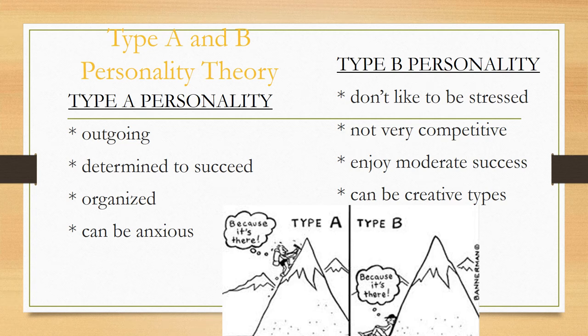There's also another personality division with Type A and Type B personality, and most people are Type B. Type A personalities are known as being extremely outgoing, determined to succeed, organized, and can be anxious — these are the people that use many different color pens to highlight things and always get things turned in on time. Type B personalities don't like to be stressed, are not that competitive, enjoy moderate success, and can be creative types. We often hear the term 'he's very Type A,' meaning they feel the need to conquer the world — CEOs, geniuses, Michael Jordan.